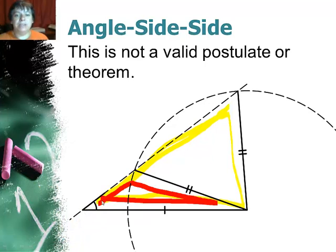with the same angle and the same two sides. It can actually be rotated and there are two ways to put the triangle together. So this is not a valid postulate or theorem to prove congruence. Normally we say it's the naughty one because it spells a naughty word, so don't use that one.